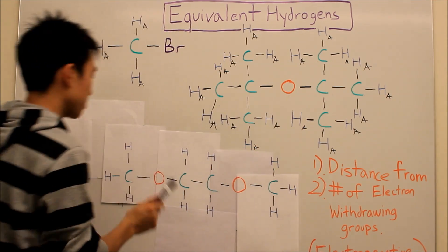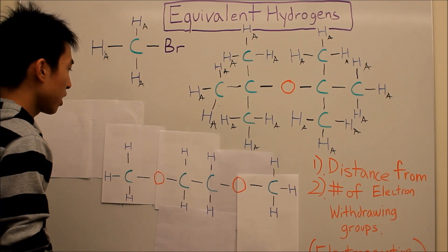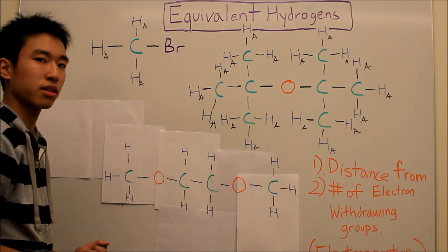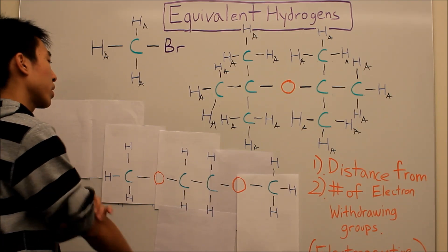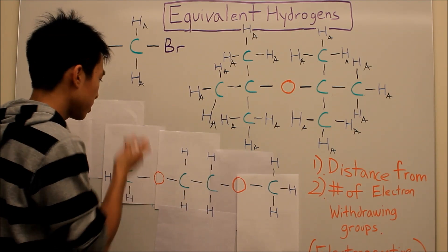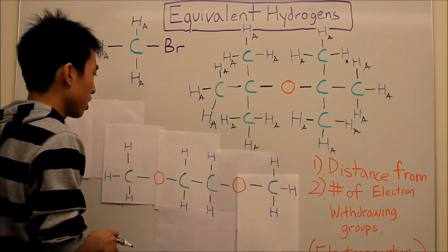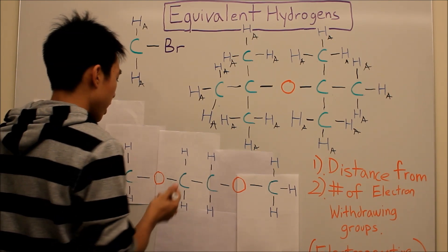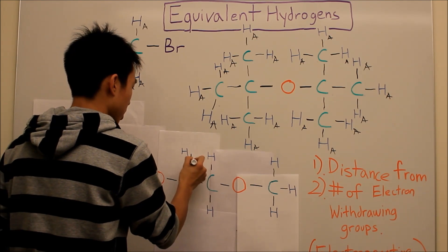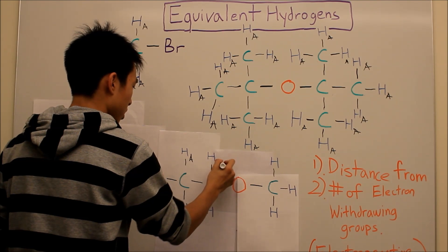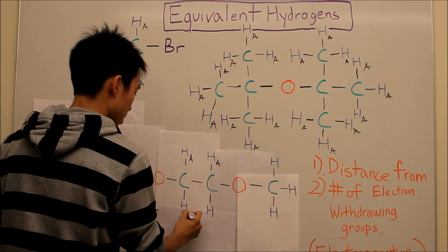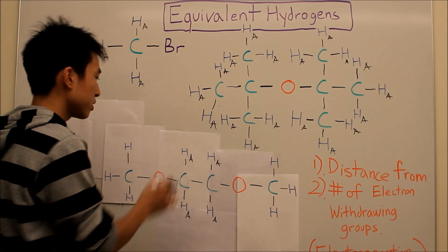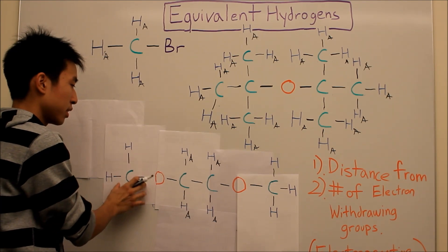So now we're going to look at this molecule here. Once again, pause the screen, group the hydrogens, and come back. In this molecule, you would label these five hydrogens as HA, HA, HA, HA, HA. But these other hydrogens are actually not equivalent to these.